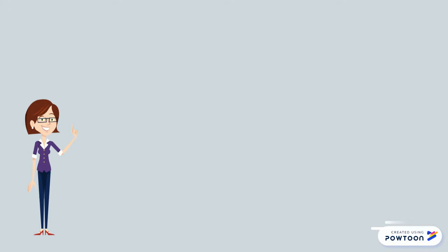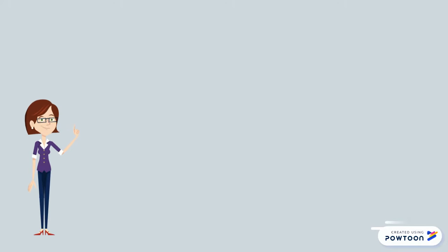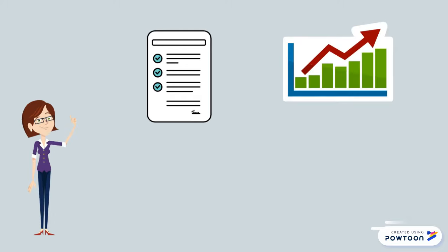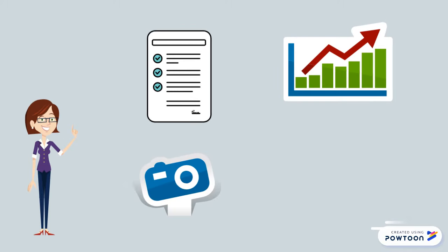Hi, everyone. Today, let's talk about the different text features authors use to organize their texts. Examples of these can be bullet points, graphs or charts, pictures and photographs, or even maps. Let's get started.